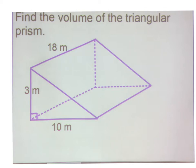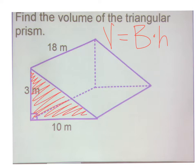For this triangular prism, we apply the volume formula: volume equals area of the base times the height for all prisms. This has a triangular base, so that's the base of your triangle.